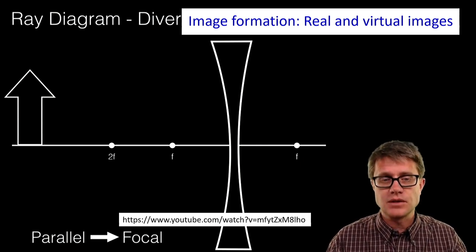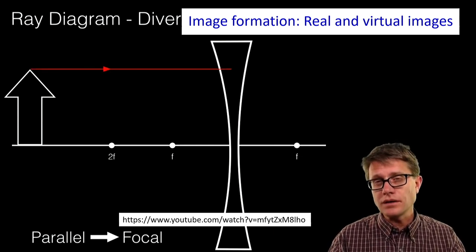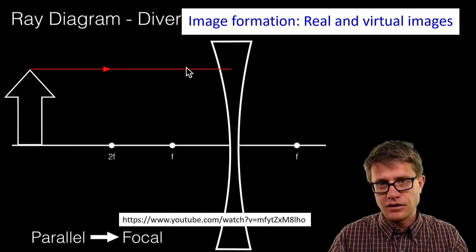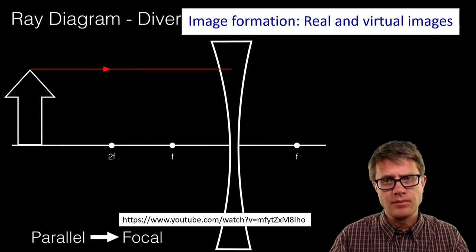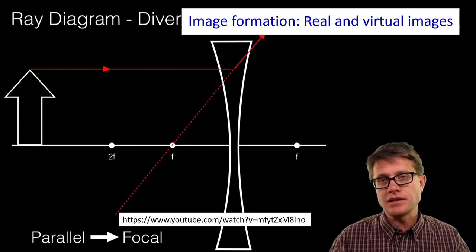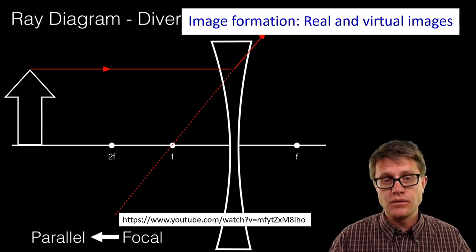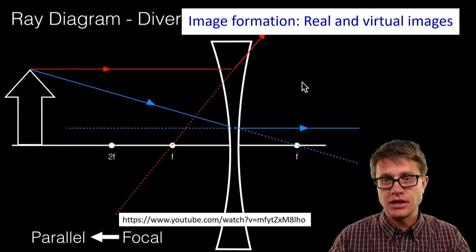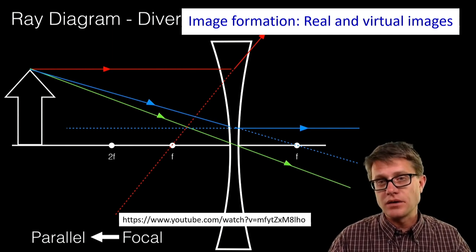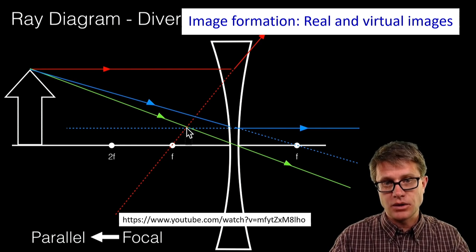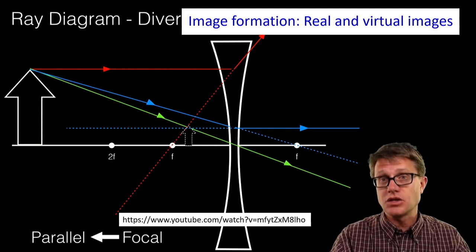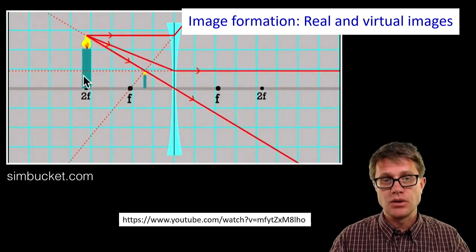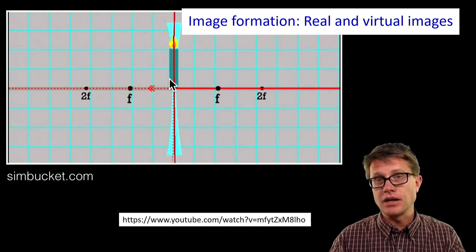Now he shows the case with divergent lenses. For a divergent lens, a parallel beam of light diverges. Ray parallel diverges through the virtual focus; ray through the center has no deviation. Continuing the diverged rays back, we construct the image — a reduced and virtual image. You can see how the size of the image changes as you move the object position.